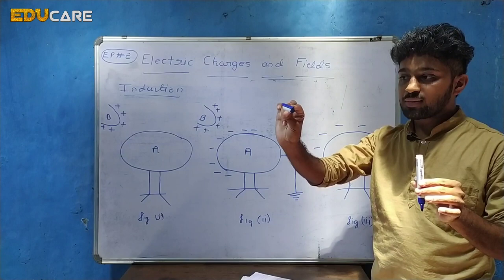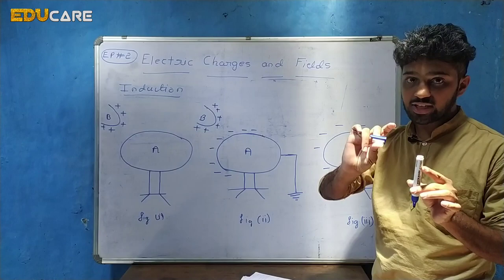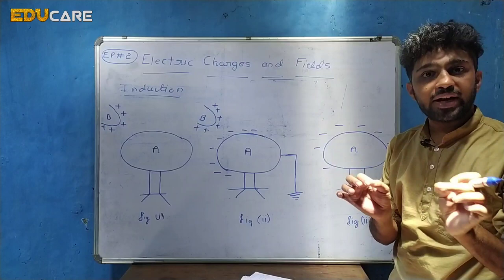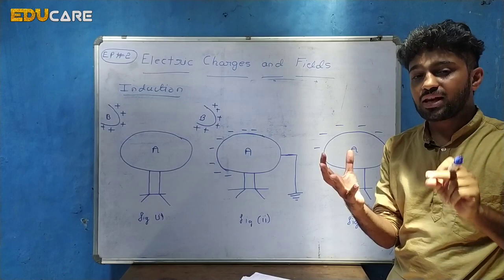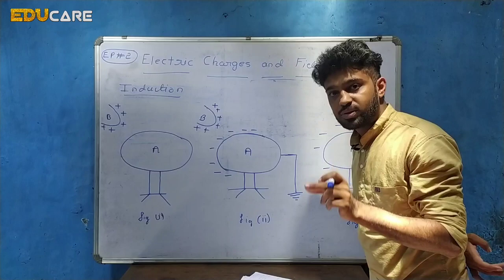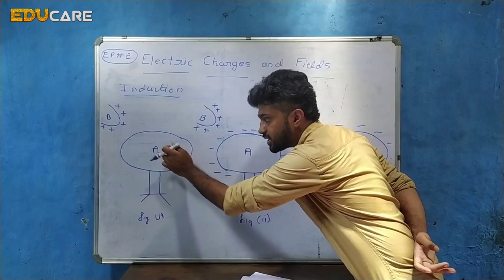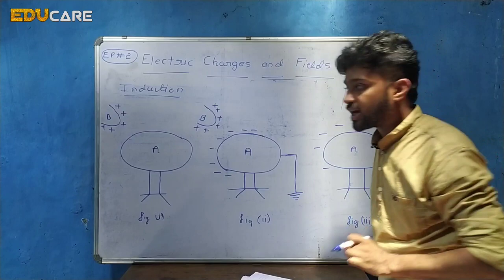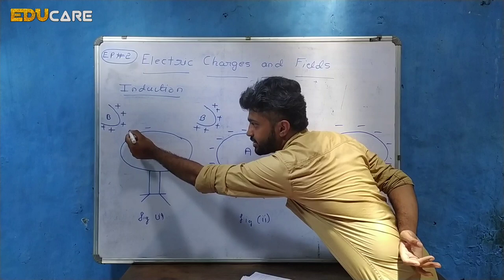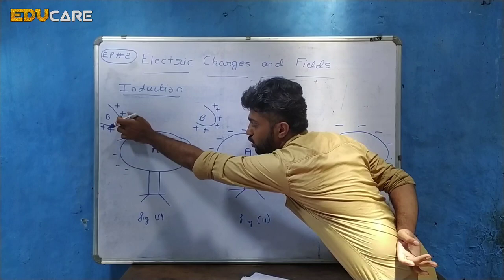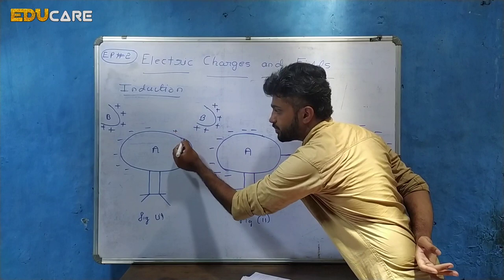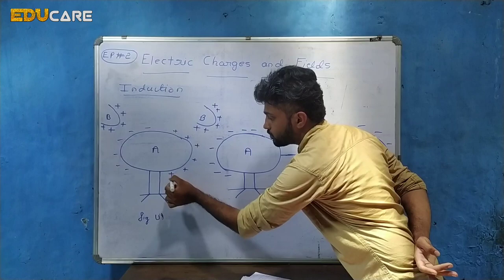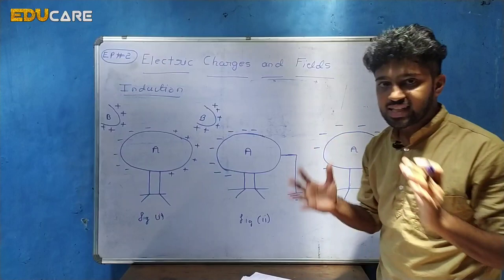We are bringing the charged body B towards the uncharged body A. This positively charged body causes body A to separate its positive and negative charges, because like charges repel and unlike charges attract. Body A has both positive and negative charges. The positive charge in B repels the positive charges in A, and attracts the negative charges in A. So negative charges arise on the face of body A close to body B, and positive charges arise on the opposite side. The charges in the neutral body get separated.